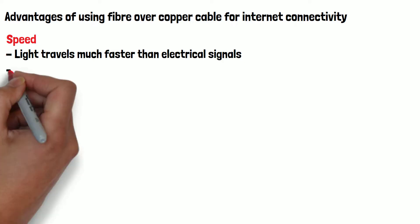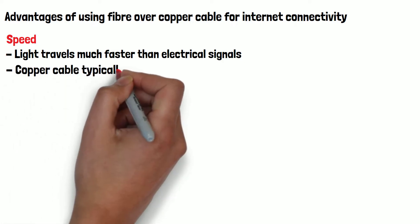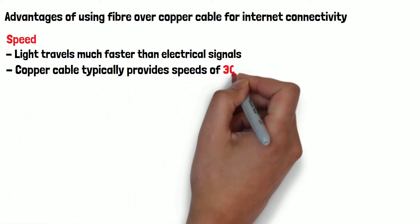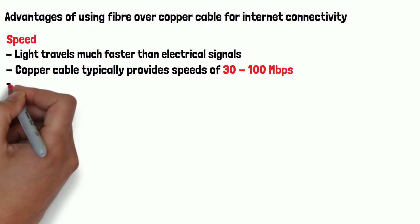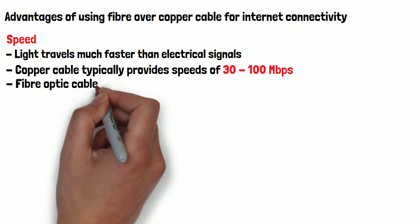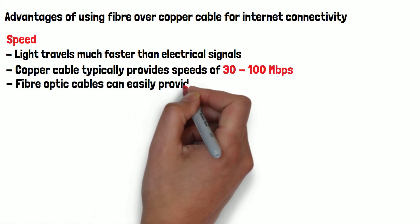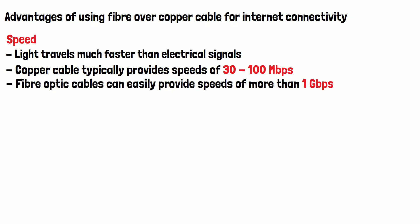Copper cable typically provides speeds of 30 to 100 megabits per second, but this varies wildly based on location and other variables. Fiber optic cables can easily provide speeds of more than 1 gigabit per second, which is over 10 times faster than copper cable internet speeds on average.